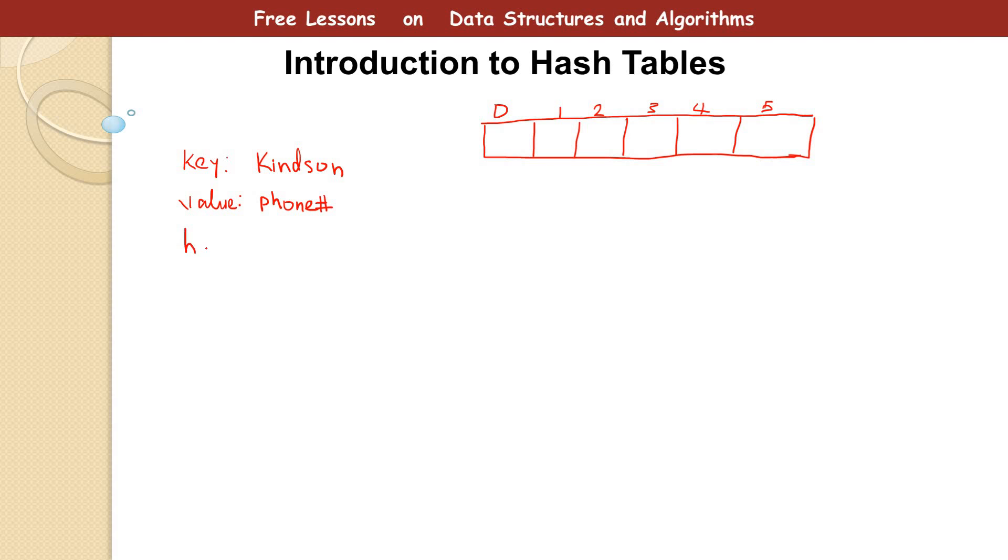To make it clearer, we need a hash function h. A hash function h takes my name and provides a location in the hash table where to store this data. So this hash function takes my name and provides a value of 2. The hash function takes the key and provides the value which represents the location in the table where to store this.